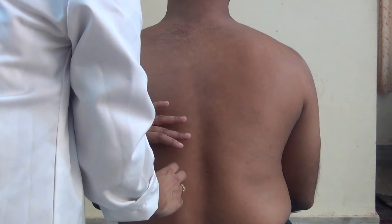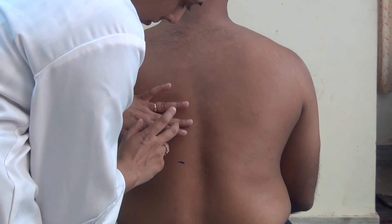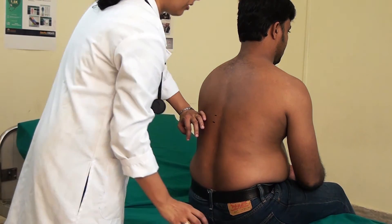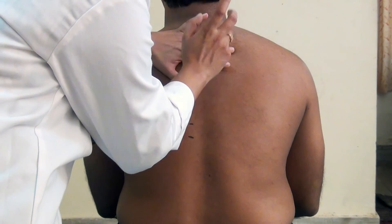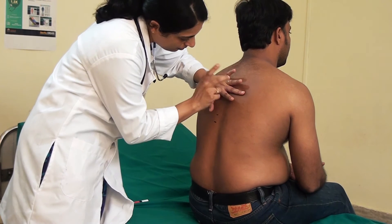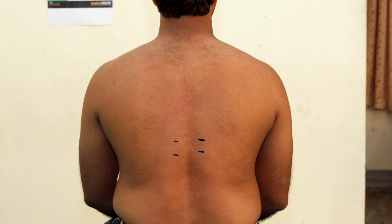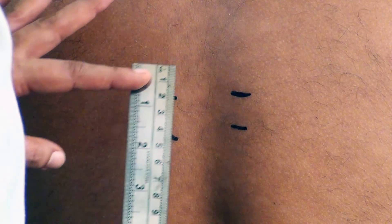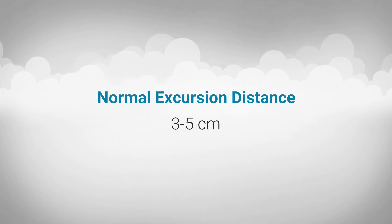Now ask your patient to exhale as much as possible and hold it. This time, begin percussing at your first landmark and move upward on the posterior thorax towards the scapula. When you notice a change from dullness to resonance, you will have found the second landmark. Place a mark at this site. Repeat this technique on the other side of the patient's posterior thorax so that you can compare measurements on the right and left sides. Once you obtain your two landmarks, measure the distance from one line to the other to determine diaphragmatic excursion. Normal excursion distance is 3–5 cm.